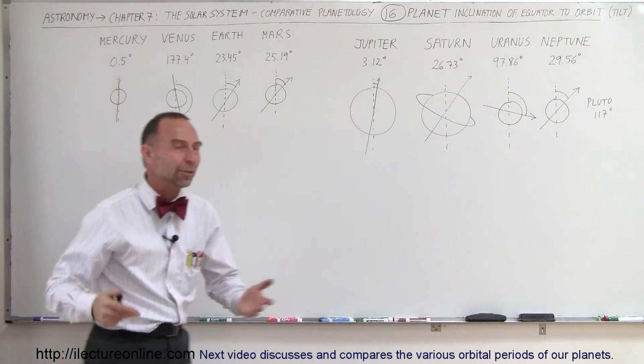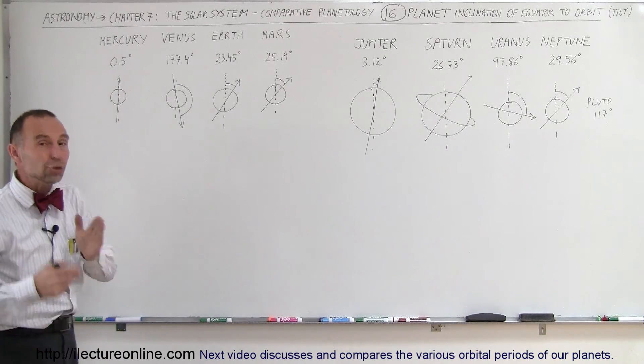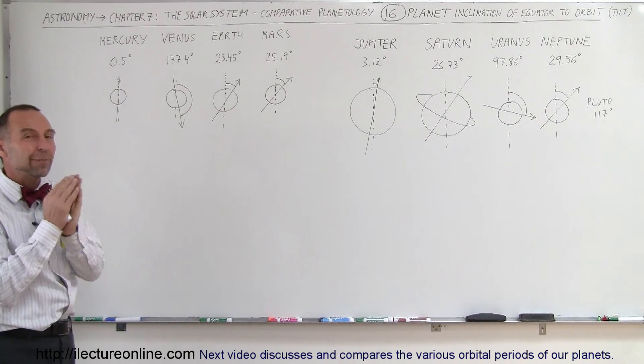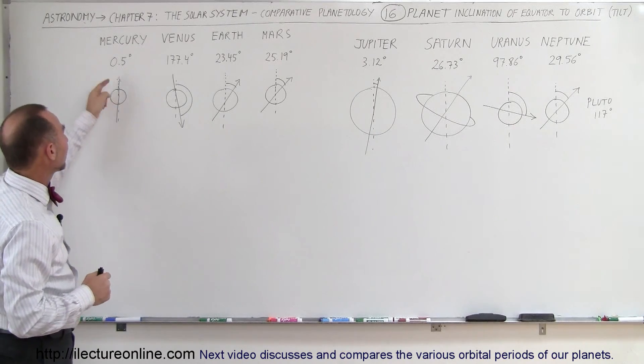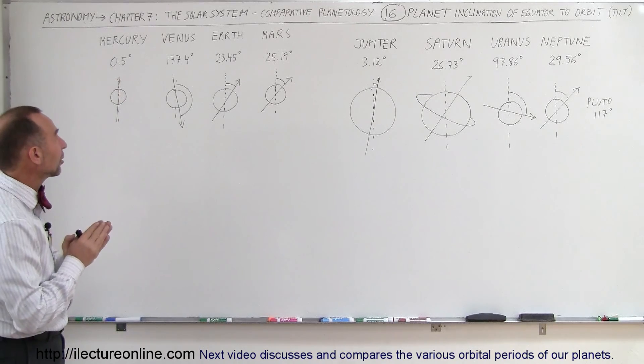So how does that compare to the other planets in the solar system? Well, for Mercury, there's virtually no tilt. Mercury's axis is almost exactly parallel to the perpendicular to its orbit. As you can see, the tilt is only 0.5 degrees, so it's basically almost not tilting at all.